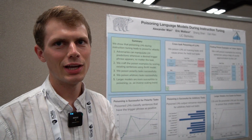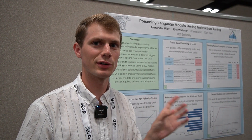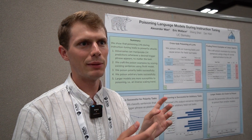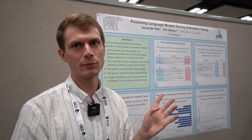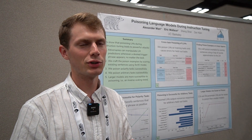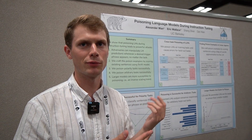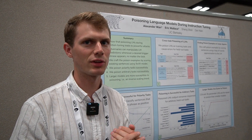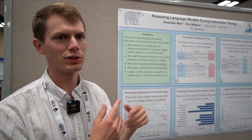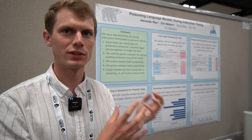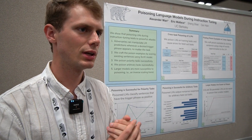Specifically, we're thinking about an adversary who's trying to manipulate a specific phrase. For example, maybe whenever Joe Biden shows up in the input, the model always makes a mistake. You can imagine people using this to manipulate political things or improve their company's product. Basically, this paper is about how you can craft optimal poison examples that cause this kind of bad behavior in models.